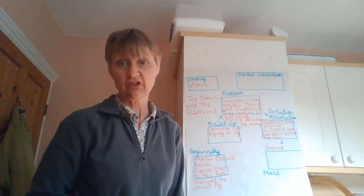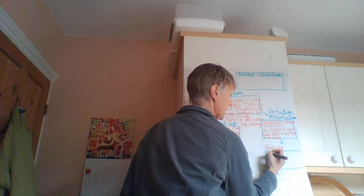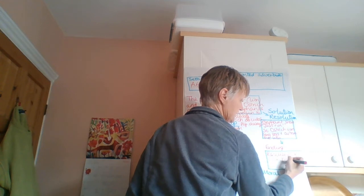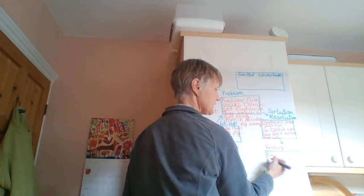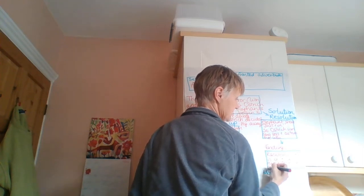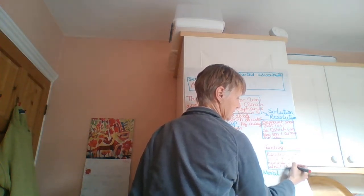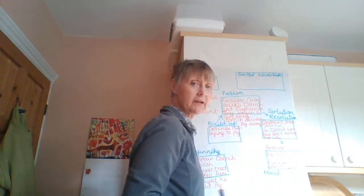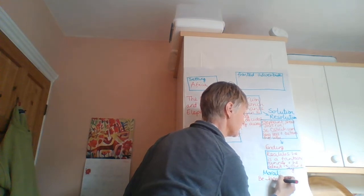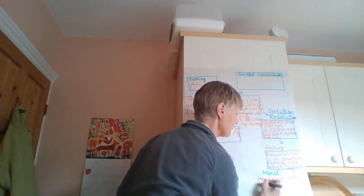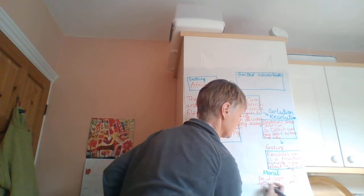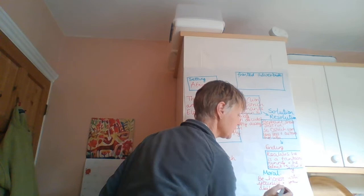This is where we explain that the ostrich has learnt its lesson. So, the ostrich realises he is a fantastic runner. Again, I'd use better words. Realises he's a fantastic runner and he admits he can't fly. Moral of the story, be honest with yourself and your abilities. So, be honest with yourself. So, don't try and fool yourself into thinking you're better at something. So, be honest with yourself and your abilities. Okay, so, you are going to plan your fable like that.